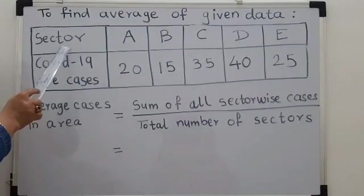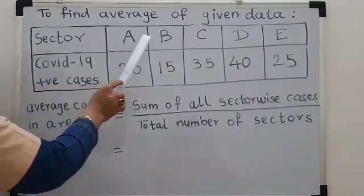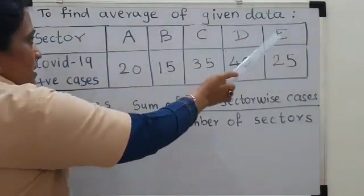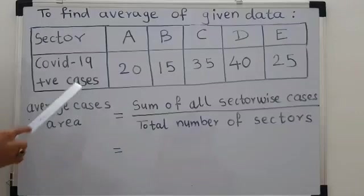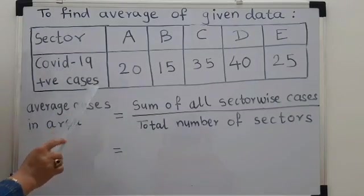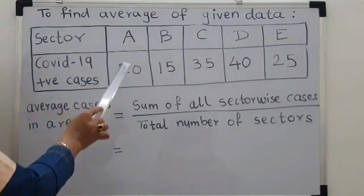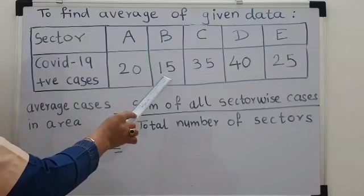The data table shows sectors in the area. A, B, C, D and E are 5 sectors in some particular area and these are COVID-19 positive cases found. In sector A, 20 cases were found. In sector B, there were 15 cases.